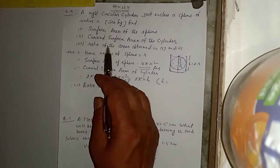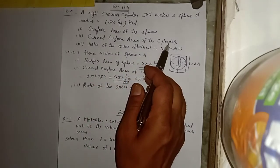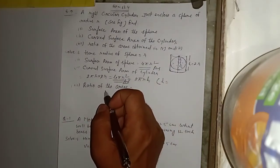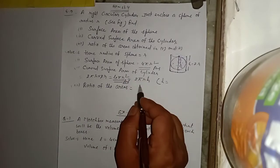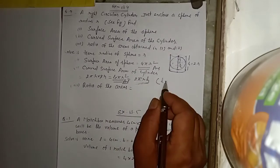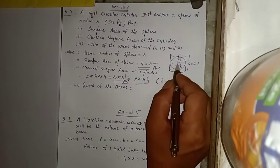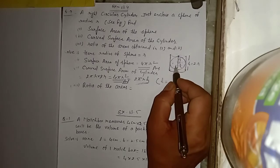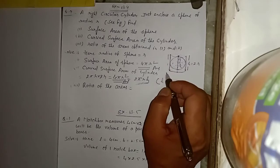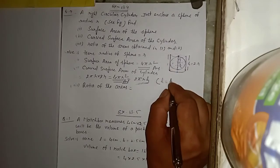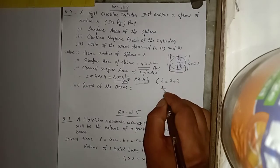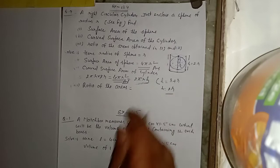Second part में curved surface area of cylinder। We know that curved surface area of cylinder = 2πrh। अब h कितना है — देखिए sphere ऊपर से r और नीचे से r है, तो height of cylinder h = r + r = 2r।